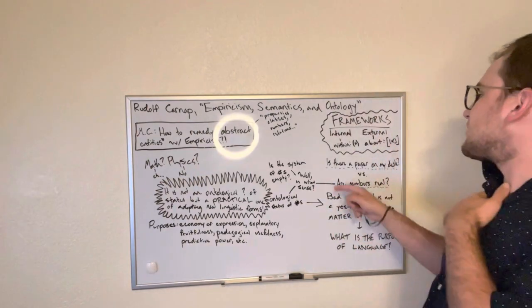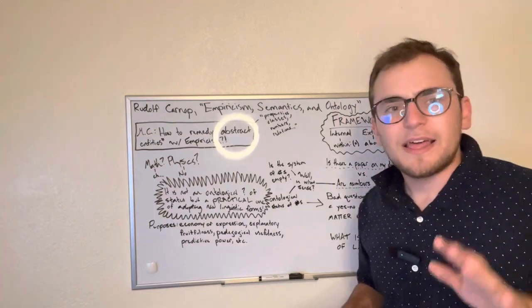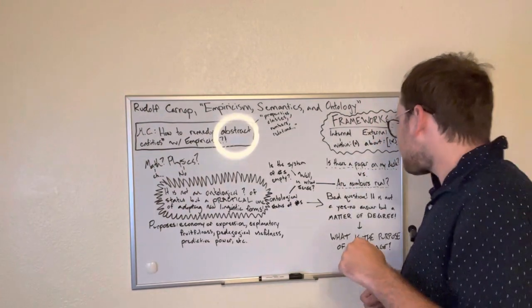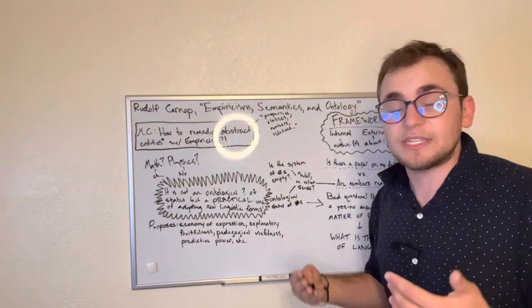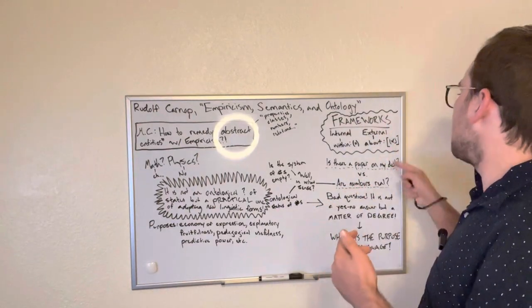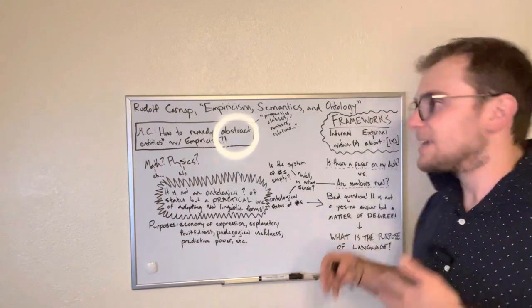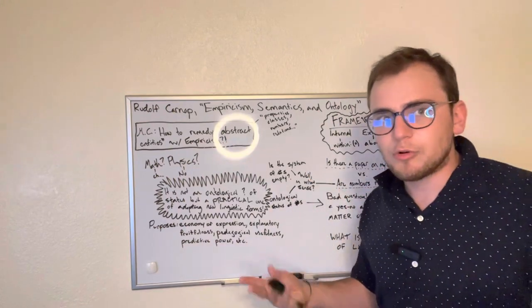So an internal question is something like, is there a paper on my desk? That's an internal question. Because it's taking for granted certain assumptions like that we can know what a paper is, what the property of desk is, the relations they're in, such as spatio-temporally, things like that.